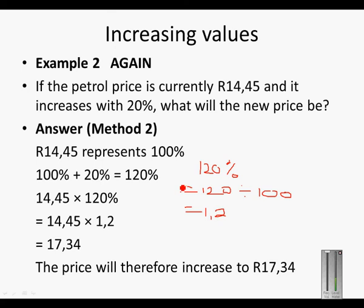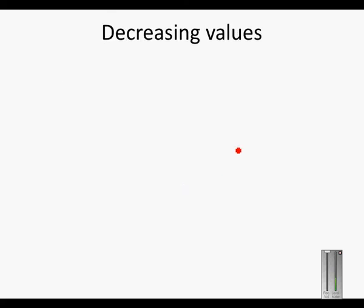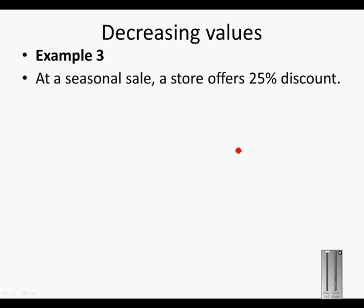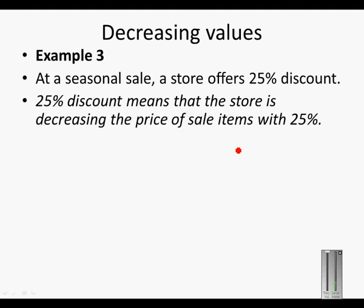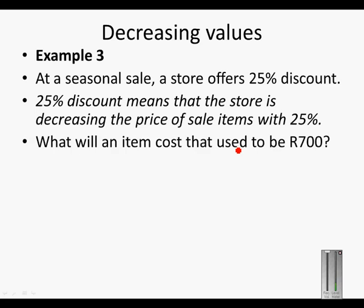So those are two methods of increasing a value. Now, decreasing values: at a seasonal sale a store offers 25% discount. A 25% discount means that the store is decreasing the price of the sale items by 25%, so this is a decrease in value. What will an item cost that used to be R700?